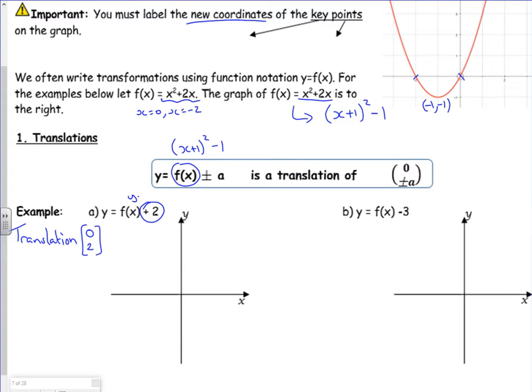And my vertex is minus 1, 1. The y-intercept is 0. So if that shifts up, it goes up to 2. So my graph now would look like that. So that would be a 2, and that would be minus 1, 1.